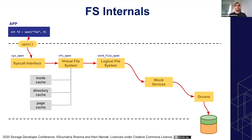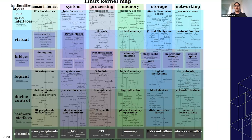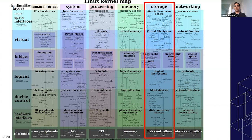If you are aware of the Linux kernel map, this section for storage shows exactly that — how a call reaches the topmost layer and eventually travels down to the disk controller layers.